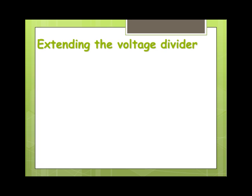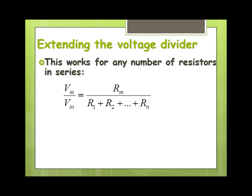Now we can extend this — it doesn't have to be just two resistors in series. We can do this for any number of resistors. You could put a hundred resistors in and the equation still works. V_in is split across the sum of all resistors, and V_out is the voltage for the single resistance of interest placed on top.